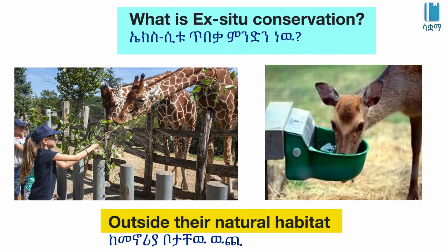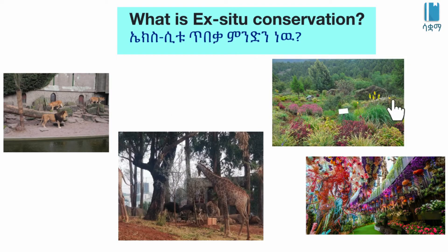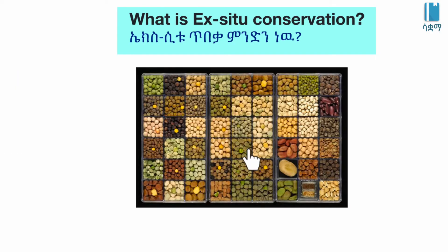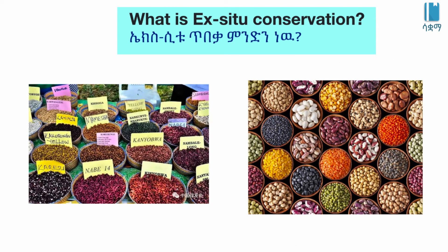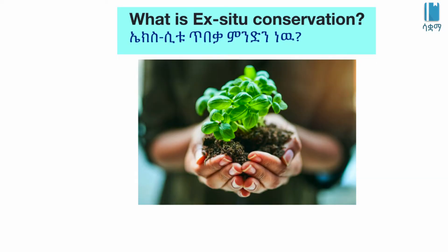Ex-situ conservation involves the establishment of Botanical and Zoological Gardens. There are banks of germplasm, which is living tissue. These include pollen, seeds, and seedlings, as well as other genes found in genetics.